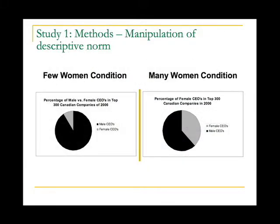Participants get some manipulation where the system justification motive is strengthened or weakened, and then they're exposed to one of two conditions. They think they're evaluating materials for a textbook. Half the participants are told there are very few women in the top 300 Canadian companies — actually more than the real proportion of female CEOs, but we couldn't present the full reality as it seemed too extreme. The other half are told there are many women, which is about a third.